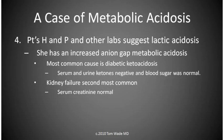The patient's history and physical and laboratory tests suggest lactic acidosis. She has an increased anion gap metabolic acidosis. The most common cause of this is diabetic ketoacidosis, but the patient's serum and urine ketones were found to be negative and her blood sugar was normal. Kidney failure is the second most common cause of an increased anion gap metabolic acidosis, but her serum creatinine was normal.